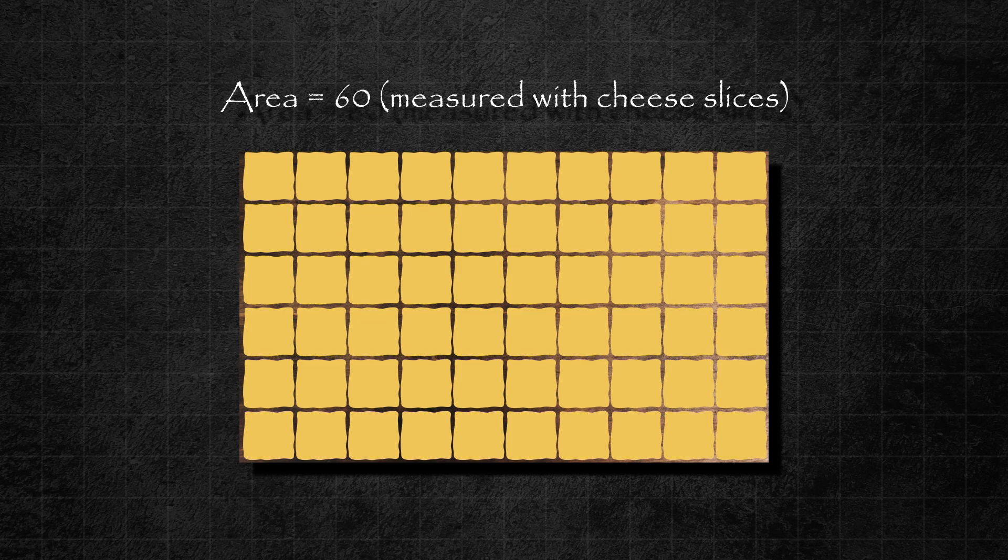When placed in a grid pattern, I was able to fit 60 cheese slices on the table, indicating that the area of this table is 60 when measured using cheese slices. You might think I am joking, but it is in fact a valid way of measuring areas.